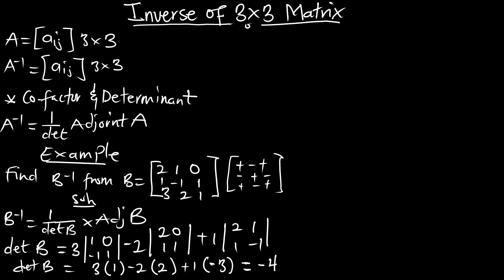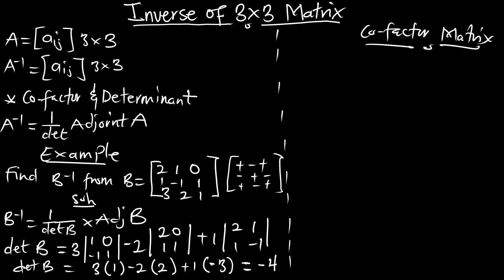Now let's move forward and find the cofactor matrix. Before we can get the adjoint of the matrix, we must transpose the cofactor. Therefore, let's find the cofactor matrix. Finding the cofactor matrix of B, we are going to get a large matrix.